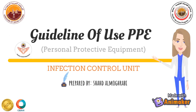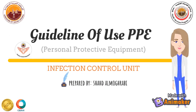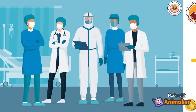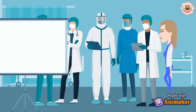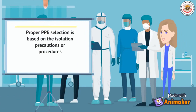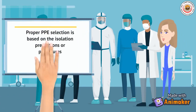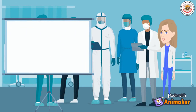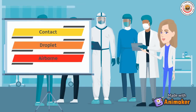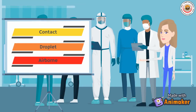Guideline of Use PPE — Infection Control Unit. Proper PPE selection is based on the isolation precautions or procedures. We have contact, droplet, and airborne isolation.